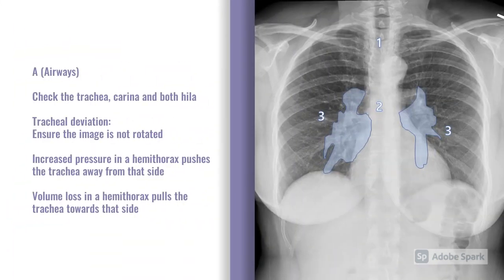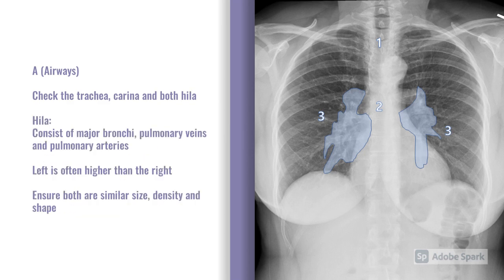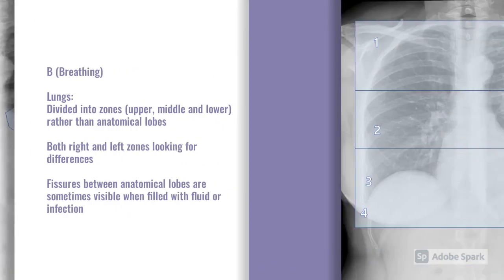When we're looking at A — airways — we're particularly interested in the trachea and the hila. Number one is the trachea, number two is the carina, and three are the hila bilaterally. We want to check for tracheal deviation. If you do have a deviated trachea, it's helpful to work out if it's been pushed or pulled. If pushed, there's increased pressure in one hemithorax pushing the trachea away. If pulled, there's volume loss pulling the trachea towards that side. The hila should ideally be a similar size, shape, and density — they're essentially a combination of the bronchi, pulmonary veins, and pulmonary arteries.